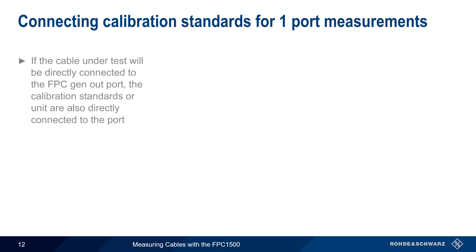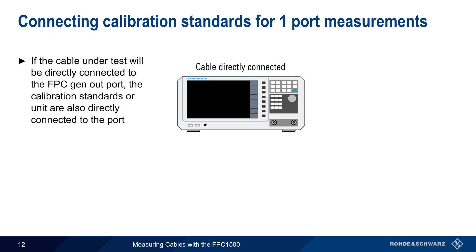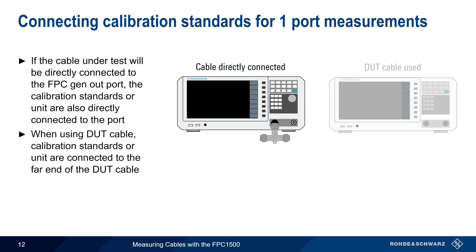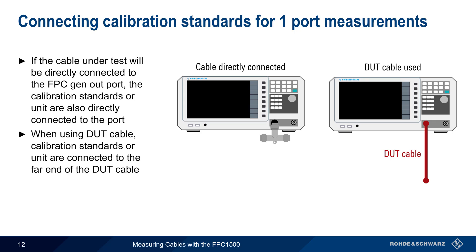If the cable under test will be directly connected to the FPC, then the calibration standards or calibration unit should also be connected directly to the port on the FPC. If, on the other hand, a DUT cable is used between the FPC and the cable under test, then the calibration standards are connected to the end of the DUT cable, since this is where the cable under test will be attached. Note that calibrating at this point will remove the effect of the DUT cable from the cable measurement.